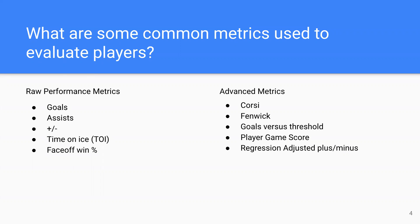There are also advanced metrics. Goals versus threshold is a metric that assigns player value in goals above what a replacement player would be — similar to a WAR statistic in baseball. Player game score is a linear combination of predictive statistics assigned different weights.